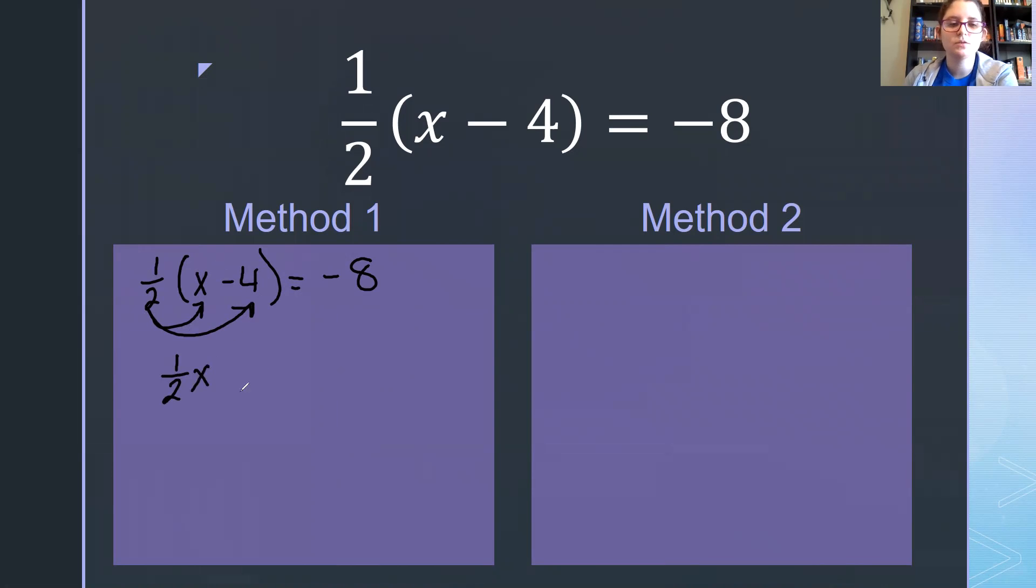One half times minus 4 is minus 2, because half of 4 is 2, and that equals negative 8. I'm going to start by moving my 2 to the opposite side. The opposite of subtraction is addition, so I'm adding the 2.